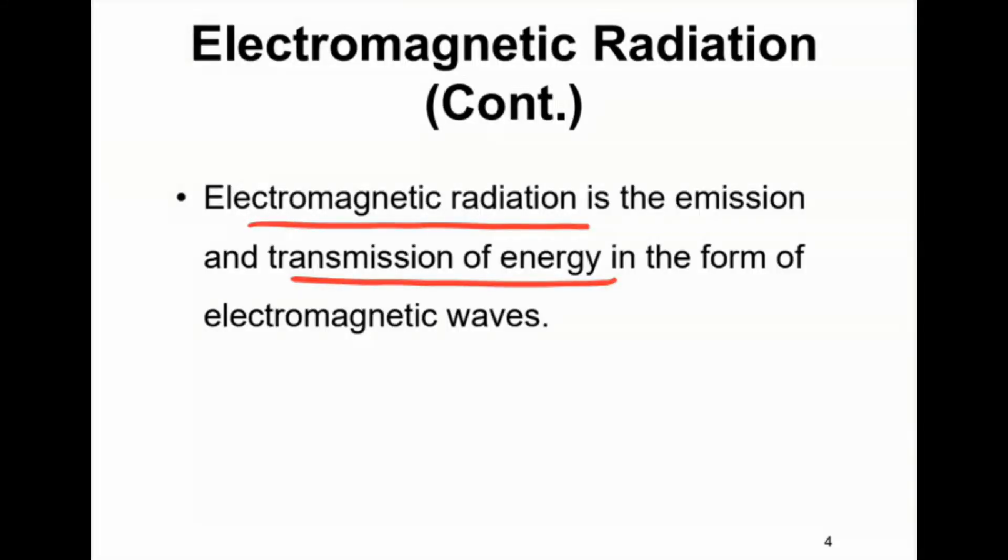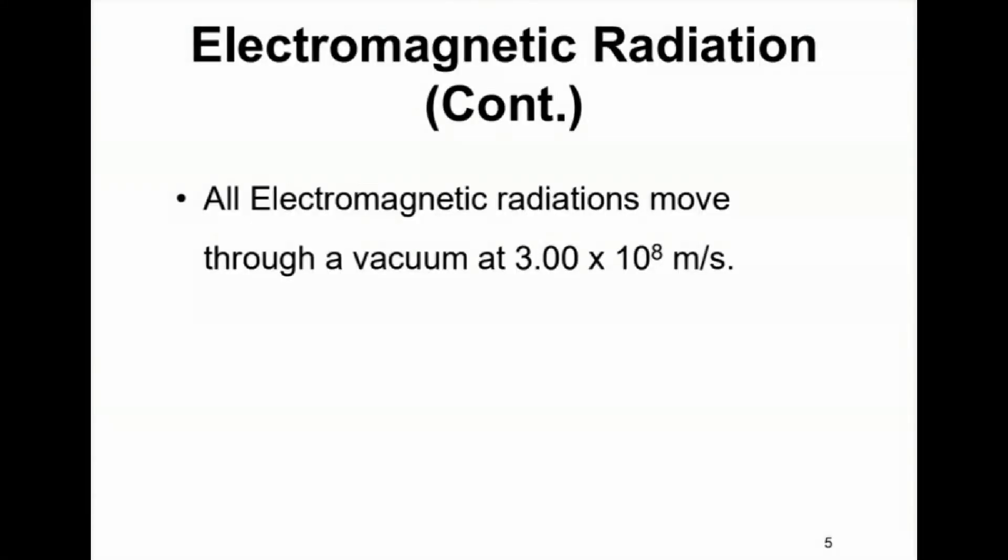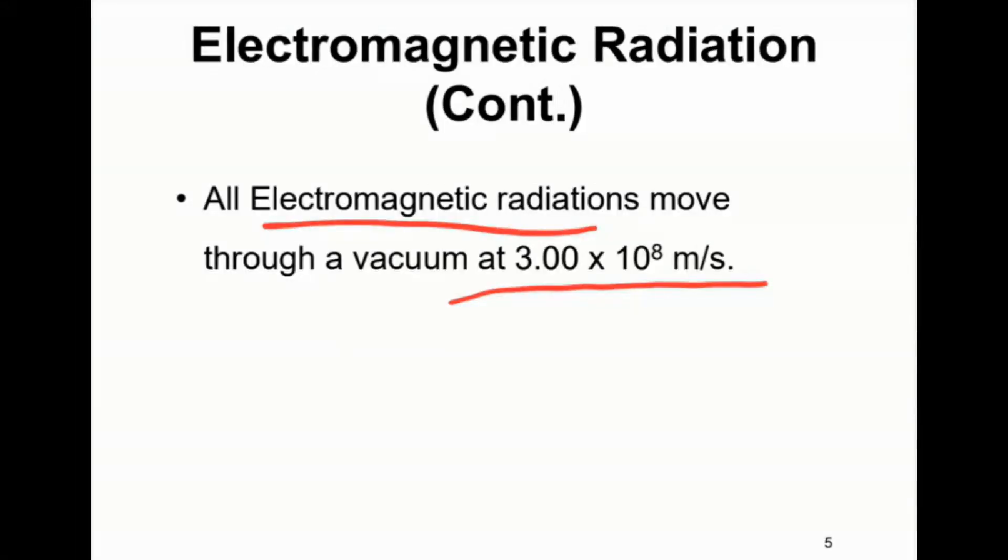Now what common feature is observed in all the electromagnetic radiation? So all electromagnetic radiation moves through a vacuum at 3 times 10 to the power of 8 meters per second, meaning that all electromagnetic radiation travels at the same speed.